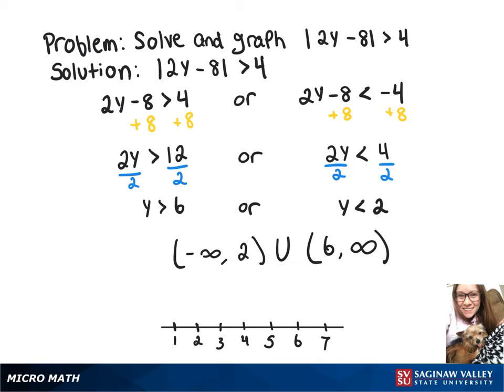So now we're going to put an open circle on the 2, and an open circle on the 6, and an arrow pointing up to infinity, and an arrow pointing down to negative infinity.